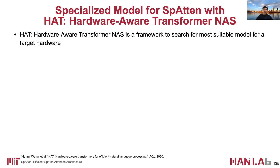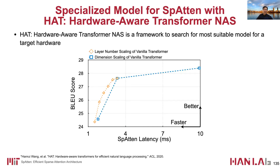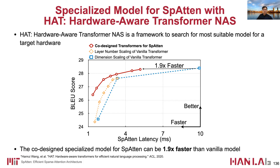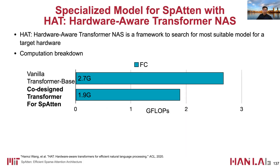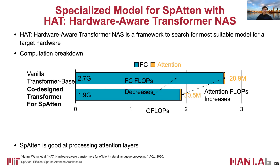Finally, we also experiment on software-hardware co-design by using a hardware-aware transformer NAS framework to search for the most suitable model for Spartan. The x-axis is Spartan latency and the y-axis is BLEU score. With the HAT NAS framework, the co-designed model achieves better accuracy-latency trade-offs and a 1.9× speedup under similar accuracy. The specialized model has significantly less FC computation but slightly more attention computation, reflecting that the Spartan accelerator is good at attention layers, so the HAT framework allocates more attention operations to the model and reduces overall computations.